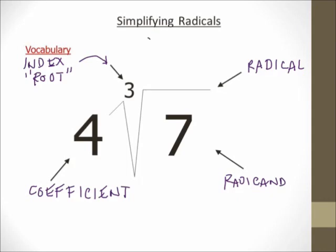Now let's say I had something like the square root of 5. Notice that there's no index written there — no number in the corner of the radical where the 3 would be in the example. If there's no number there, it's a 2. Mathematicians are lazy, so they like to take the easy way out — most of the time it is a 2, so they just don't write it. Now the coefficient in this case is a 1. You wouldn't see it written there, but just like with x, there's a coefficient of 1. Square root of 5 has a coefficient of 1; it's just not written.